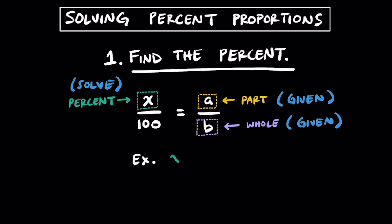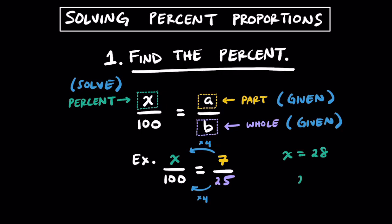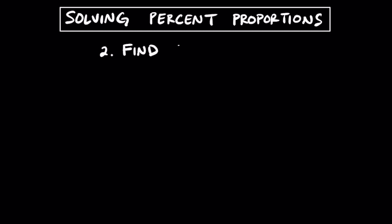For example, if we had x over 100 is equal to 7 over 25, then to get equivalent ratios we'd multiply 7 over 25 by 4 on top and bottom to find out that x equals 28. So the ratio of 7 to 25, or 7 out of 25, is 28%.